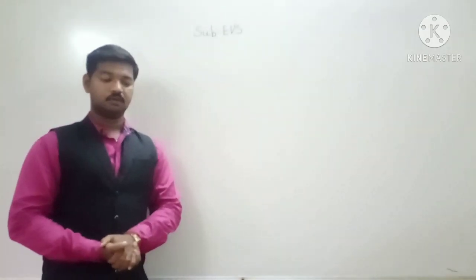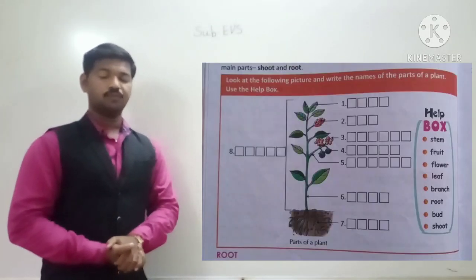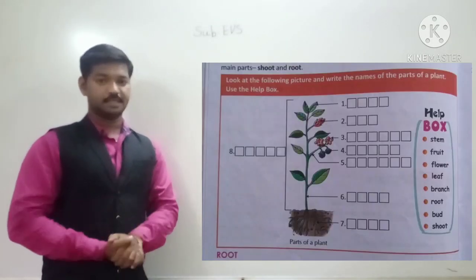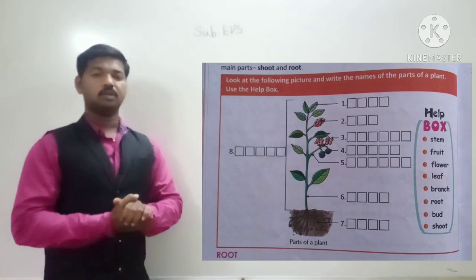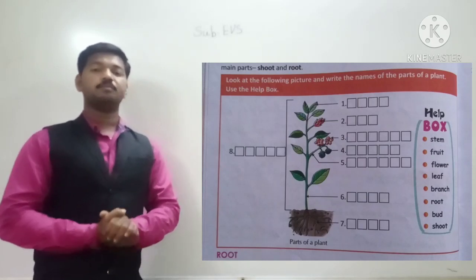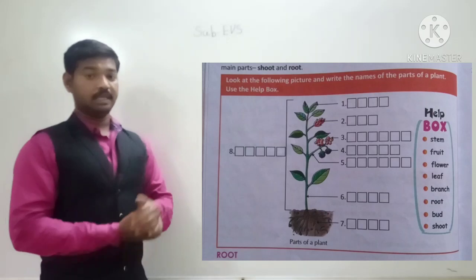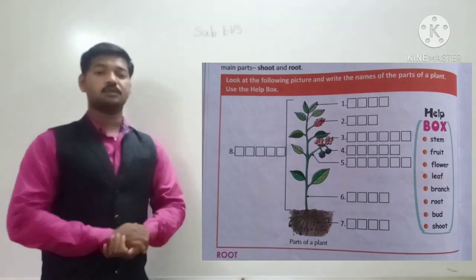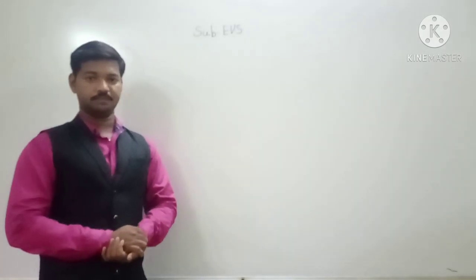Now see here, on page number 36. One box is given here. In that box, you have to write the names of parts of the plant. A help box is also given.